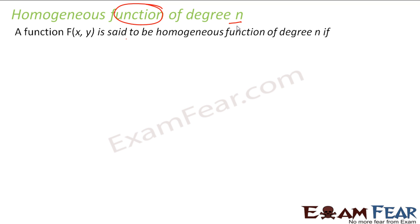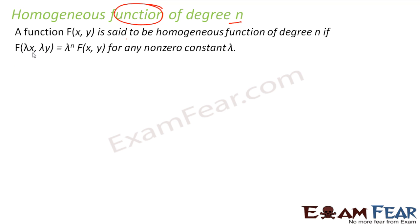A function is said to be a homogeneous function of degree n if, for my function f(x, y), we have f(λx, λy) = λⁿ · f(x, y), where λ is any non-zero constant. This kind of function is called a homogeneous function of degree n.